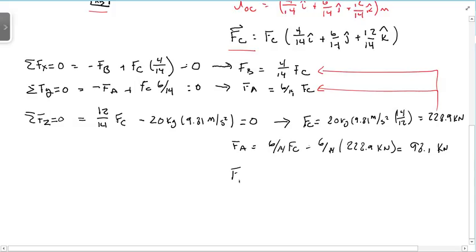FB is equal to 4 over 14 F sub C. And that gives us 4 over 14 times 228.9 kilonewtons. And that results in 65.4 kilonewtons.